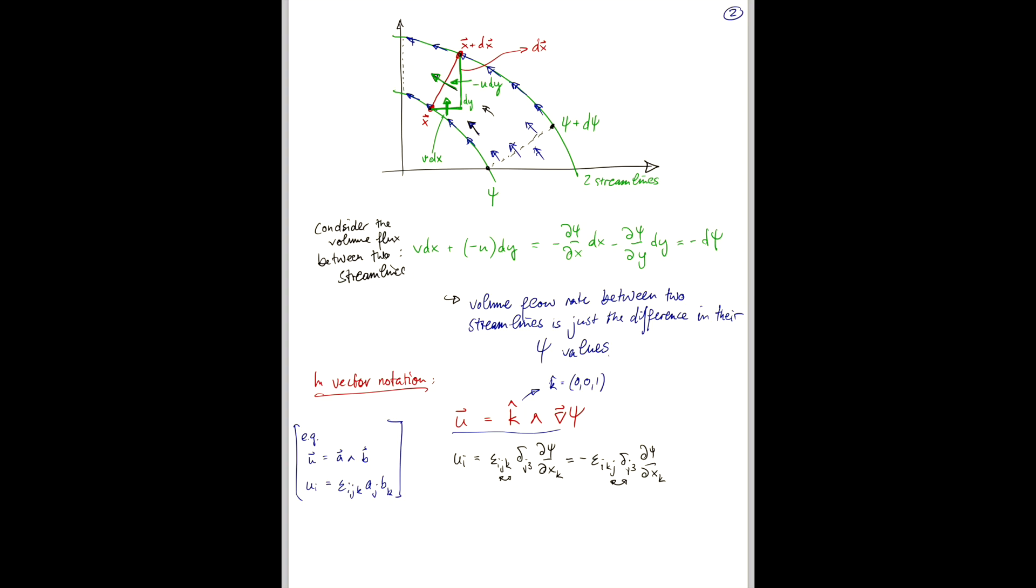So, it's minus epsilon ik3 d psi dxk. And in order to now contract k3 and k, we have to permute again. And so, we pick up another minus sign. So, now it's epsilon i3k d psi dxk. And that only has two non-zero components, namely when k is 2 and when k is 1, because epsilon is 0 when k is 3.